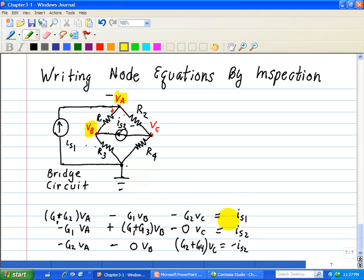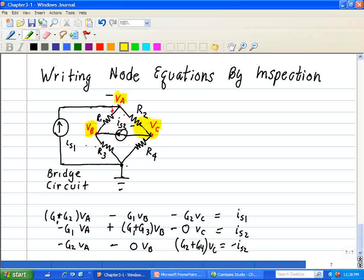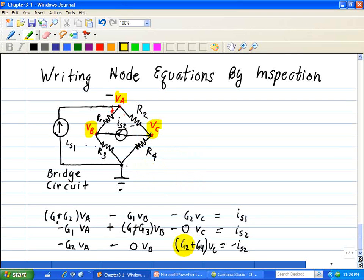So one more. VC. We see node VC. And what's connected to node VC? Well, we see it's R2 and R4, so that's just G2 plus G4 times VC. What's connected to the opposite of R2? It's minus VA. So it's G2 minus G2 times VA. What's connected to the opposite of R4? Well, it's our reference node, or minus zero VB.